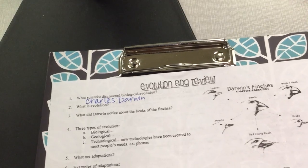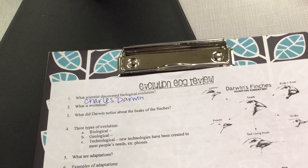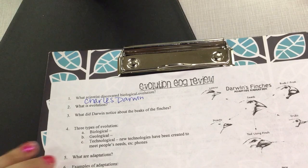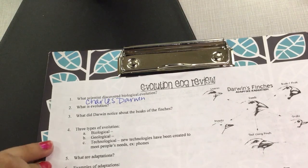Hey Super Scientists, we're looking at your evolution EOG review guide. Number one: what scientist discovered biological evolution? That is Charles Darwin, referred to as the father of evolution.